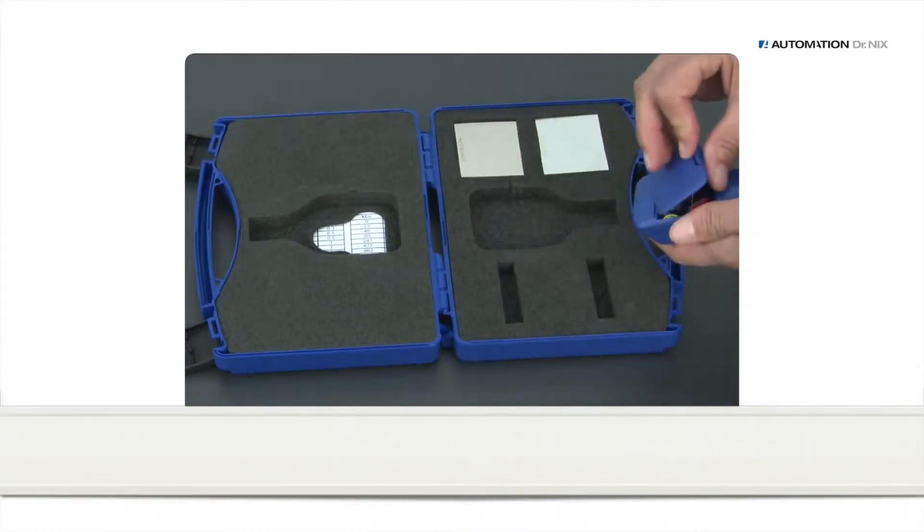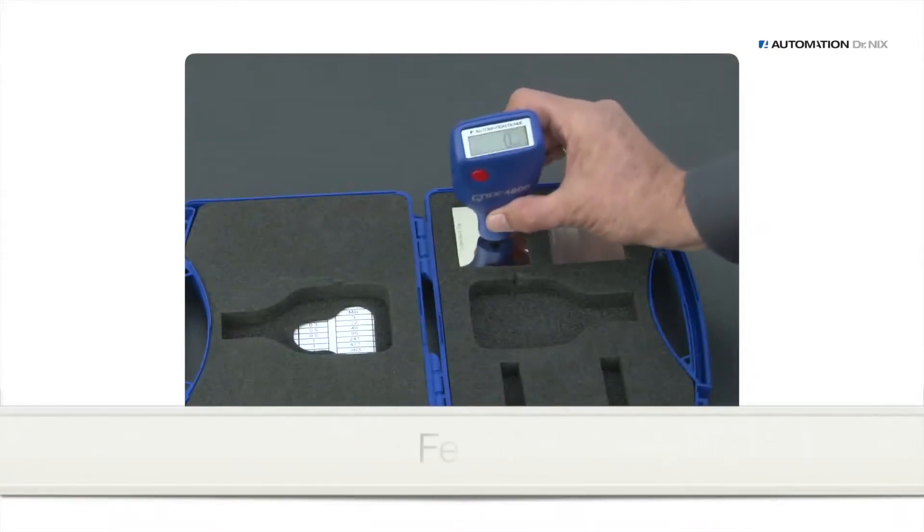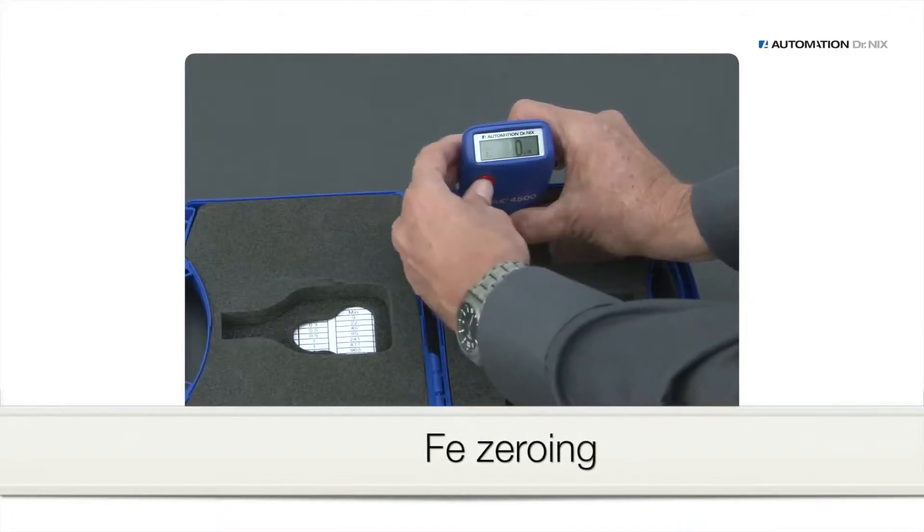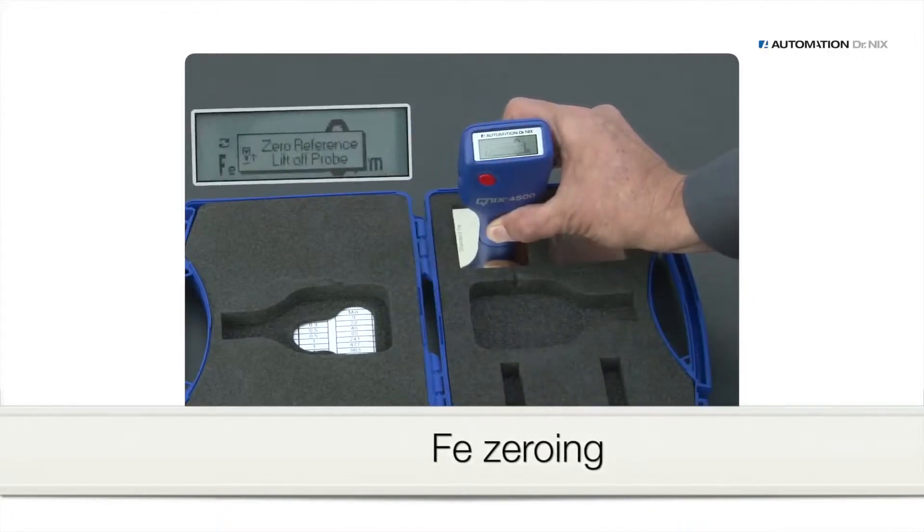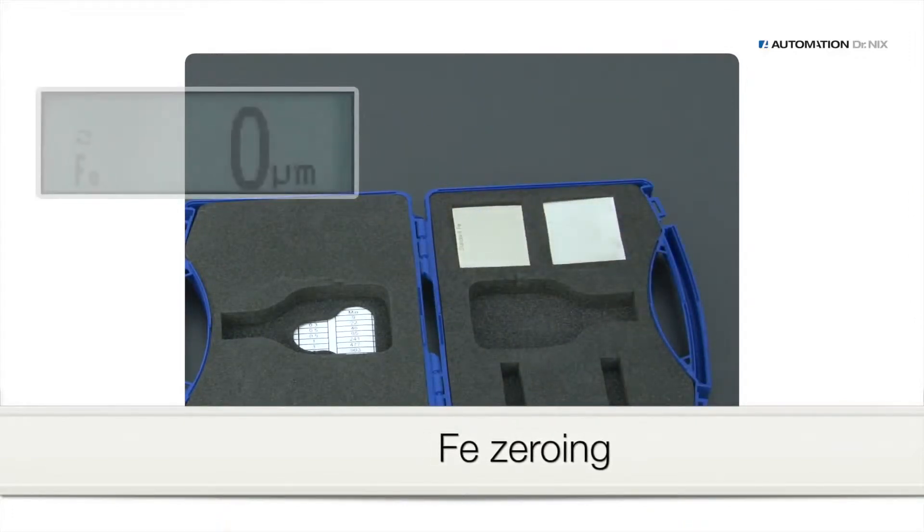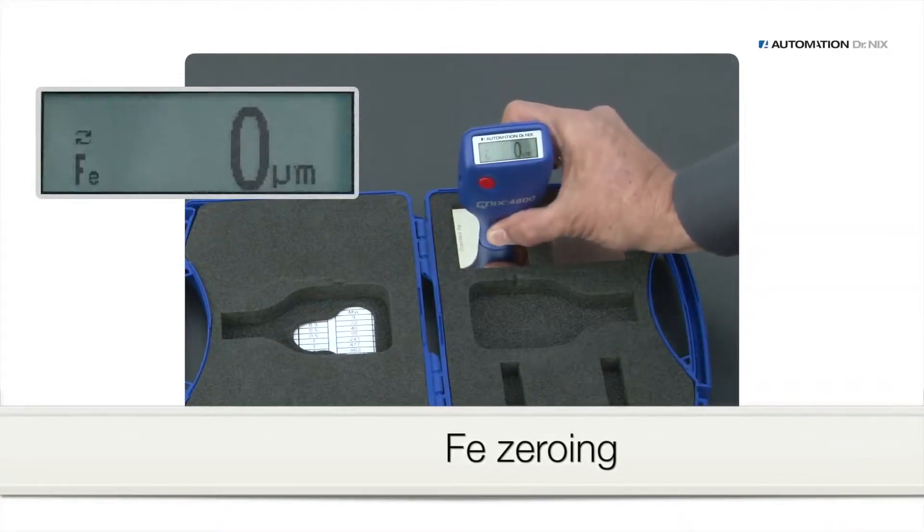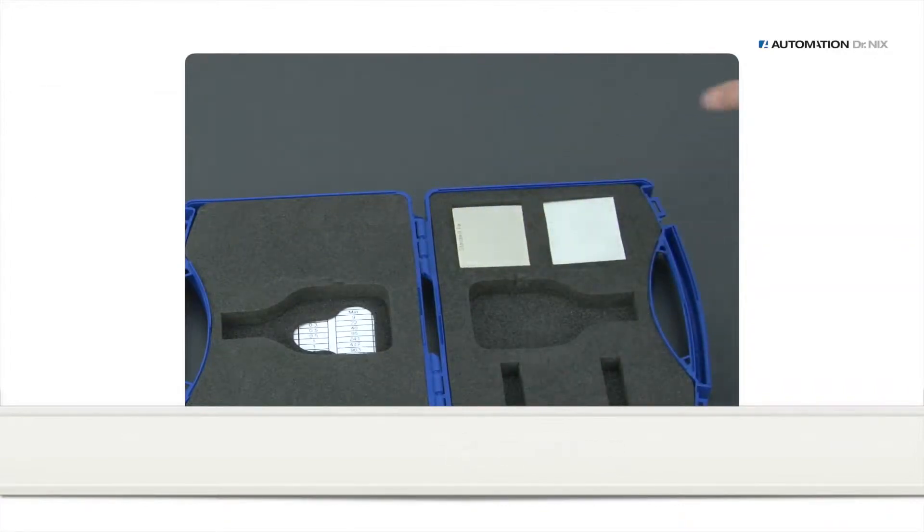To perform a zeroing of the gauge, put it onto the zero reference plate, here iron. Press red button. Lift gauge at least 10 cm or 4 inches up until the display shows zero. Zeroing of aluminum is done the same way on the NFE plate.